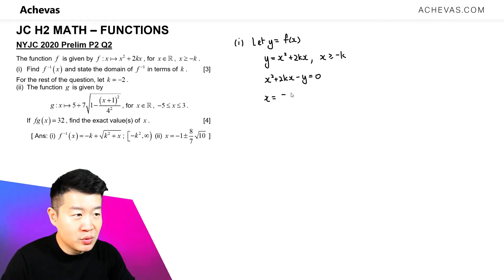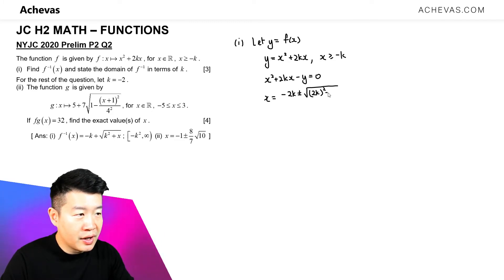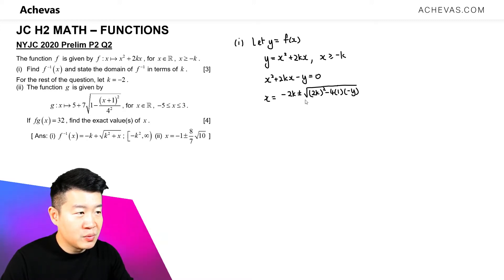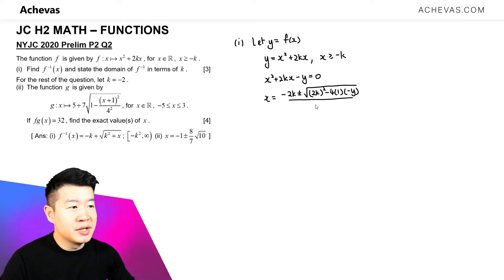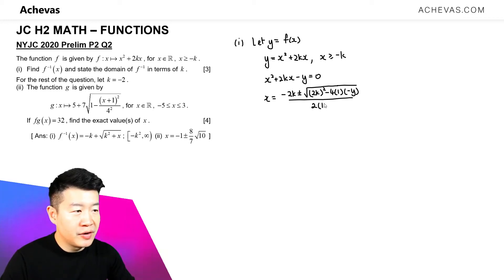So x is going to be equal to minus 2k plus or minus the square root of (2k) squared minus 4 times the coefficient of x squared, which is 1, times the term independent of x, which is minus y. This is going to be divided by 2 times the coefficient of x squared, so 2 times 1.